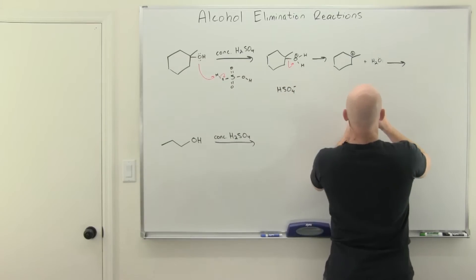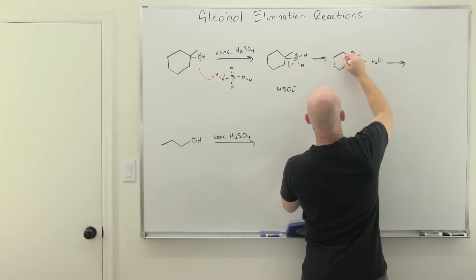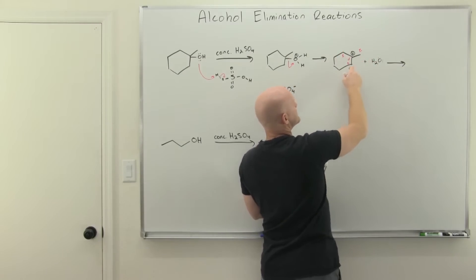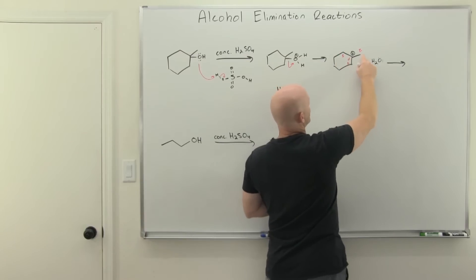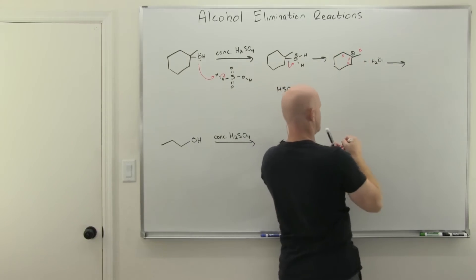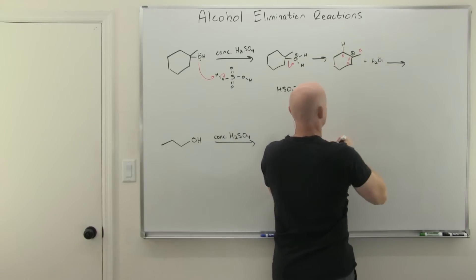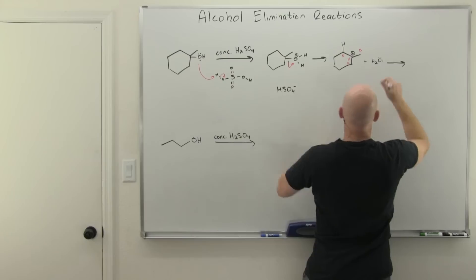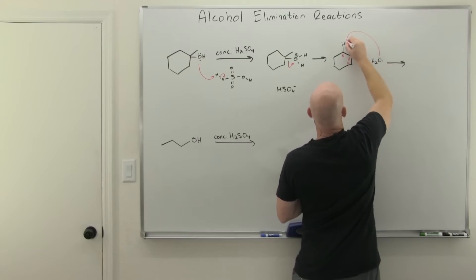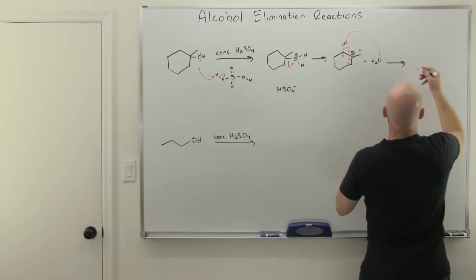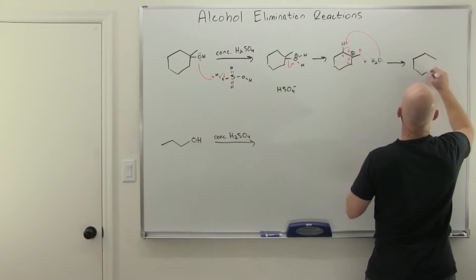In this case we've got our alpha carbon as the carbocation, and then we've got three adjacent beta carbons. Our secondary, being more substituted, is where Zaitsev's rule says to deprotonate, whereas Hofmann would go with the primary. You can have water or HSO4⁻ come and deprotonate — you'll commonly see it done with water — giving us our alkene.